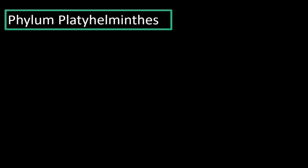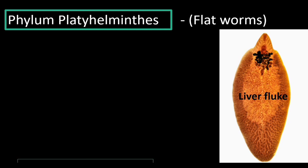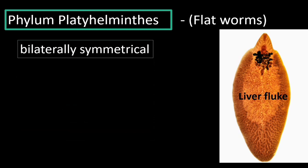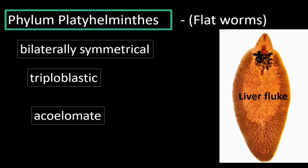Now let us move on to the phylum Platyhelminthes. Platy means flat, and helminth means worms — so these animals are called flatworms. Their body is flat. Liver fluke is an example; it lives inside the body of sheep, flattened like a small leaf. These organisms are bilaterally symmetrical — the body can be divided into two equal halves through one line. They are triploblastic animals, having ectoderm, endoderm, and mesoderm.